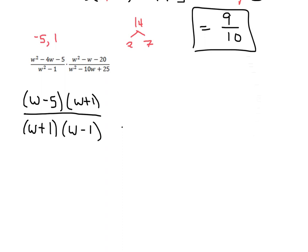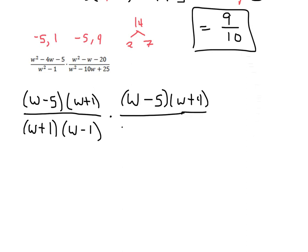Now let's take a look at w squared minus w minus 20. We're looking for factors of negative 20 that add to negative 1 — those are going to be negative 5 and positive 4. So the numerator of the second fraction is going to factor into w minus 5 and w plus 4. And the last denominator: factors of 25 that add to negative 10 are going to be negative 5 and negative 5, so it factors into w minus 5 and w minus 5.